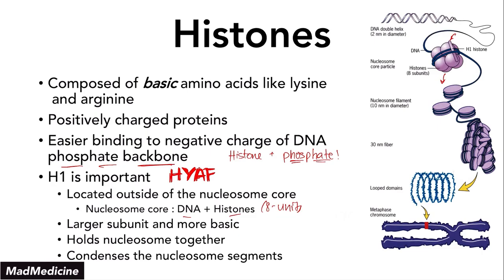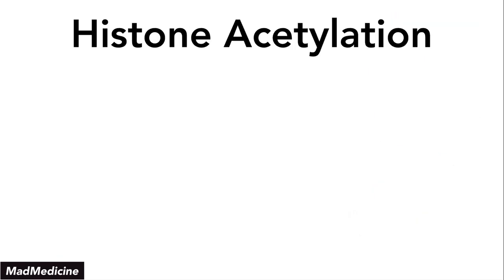But we also need to be able to undo this process. Just like we need to be able to undo DNA methylation when we need to transcribe something, we need to undo histone modification — we need to undo this packing of histones. And the way we do that is by modification processes. The first one we're going to discuss is histone acetylation. Acetylation is the main one you need to know because deacetylation will just be the opposite of acetylation.